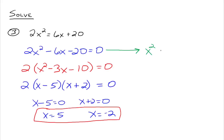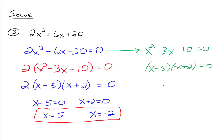Alternatively, we could have divided everything by 2 right at the start to get x squared minus 3x minus 10 equals zero, then factored to x minus 5 times x plus 2 equals zero, and still arrived at x equals 5 and x equals negative 2. The point is: if your greatest common factor is a numerical value, it's okay to divide both sides by that number, because a constant factor doesn't affect the solutions — we wouldn't set the number 2 equal to zero anyway.